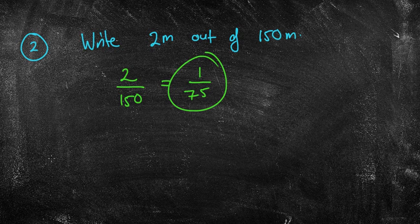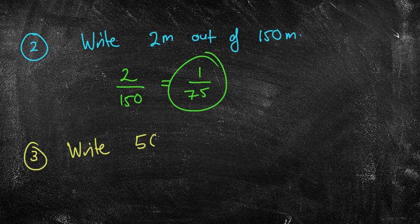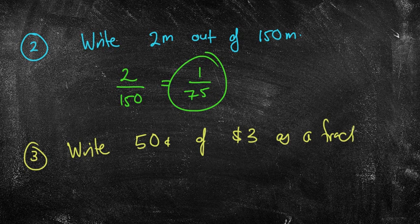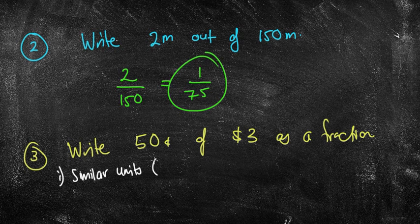See how easy that's going to be? So, where do they get more challenging? Well, let's look at this one. We're going to write 50 cents of $3 as a fraction. Okay, so I said the most important thing to start off with is you want to have the same units or similar units, which means, i.e., that is, the same. We are the same. Okay, so the similar units.